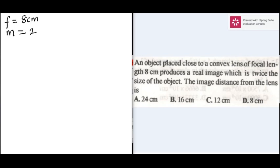Image distance is unknown. Magnification can be expressed as image distance all over the object distance. This implies that the image distance v equals mu. We can substitute the magnification as 2, which gives us v equals 2u. Let's take this as equation 1.